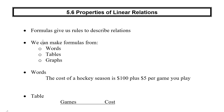So here we have 5.6, Properties of Linear Relations. Formulas give us rules to describe relations. When we have a formula, it tells us exactly what the relationship between our two variables is going to be. And we can make formulas from three different types of variations: words, tables, and graphs.